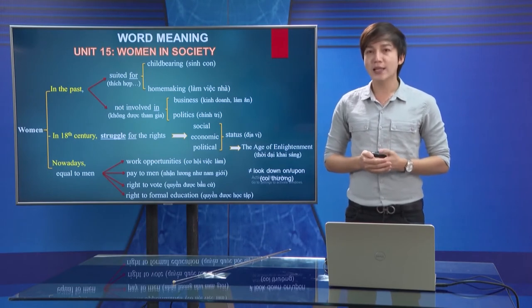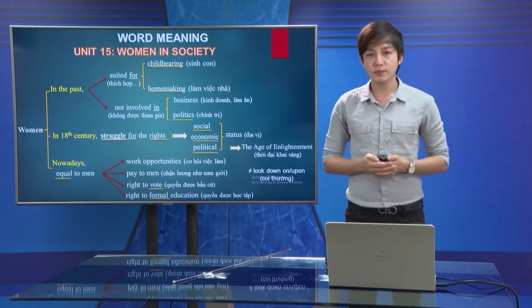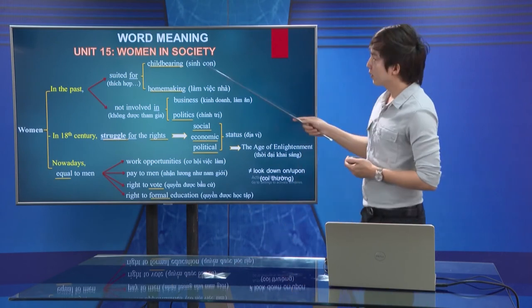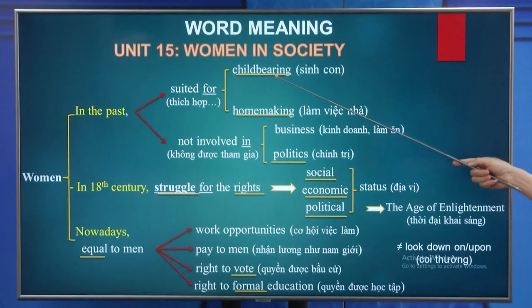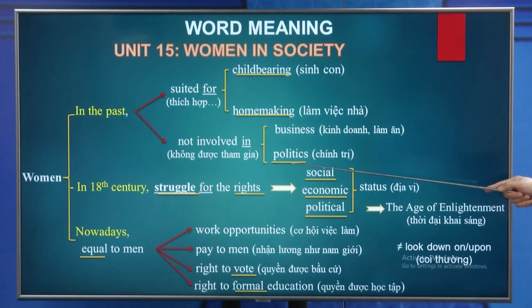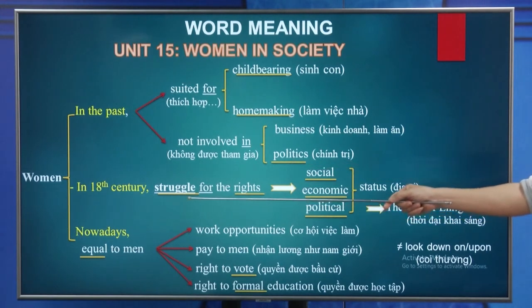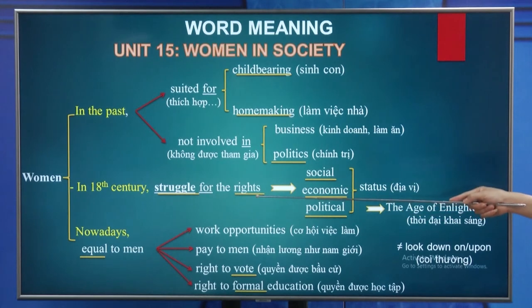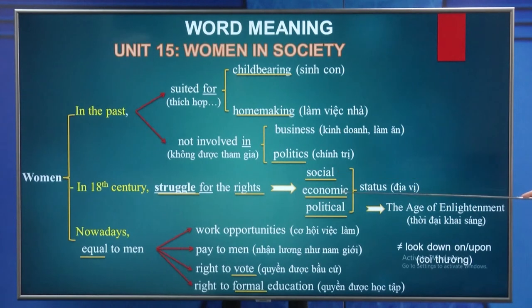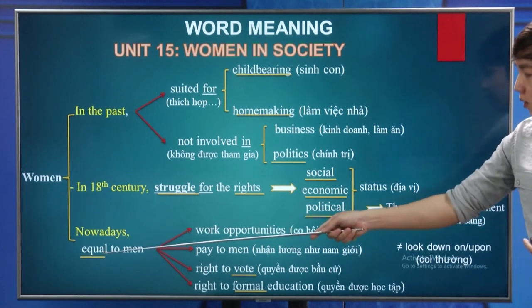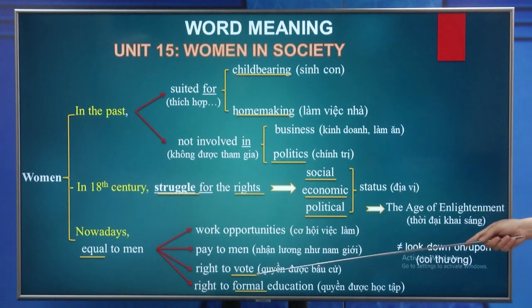Key vocabulary for Unit 15 includes: childbearing, homemaking, politics, struggle, rights, social, economic, political, equal, vote, formal.